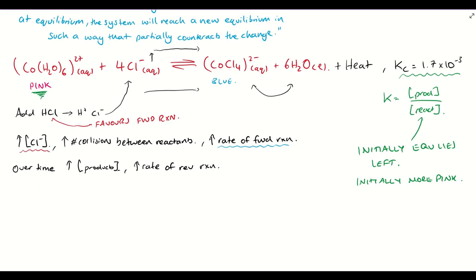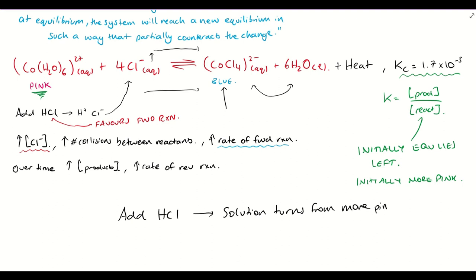What happens when we add the hydrochloric acid? We've just seen that we favour the forward reaction, and the forward reaction favours the production of these blue ions. So if we add hydrochloric acid, we favour the forward reaction and the solution turns from more pink — because that's where it was initially — to a more blue colour. It's not turning from distinctly pink to distinctly blue; it's going from more pink to more blue.